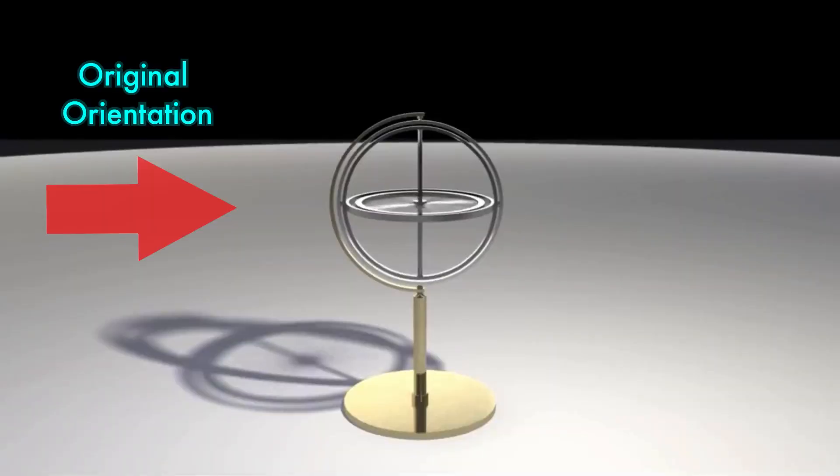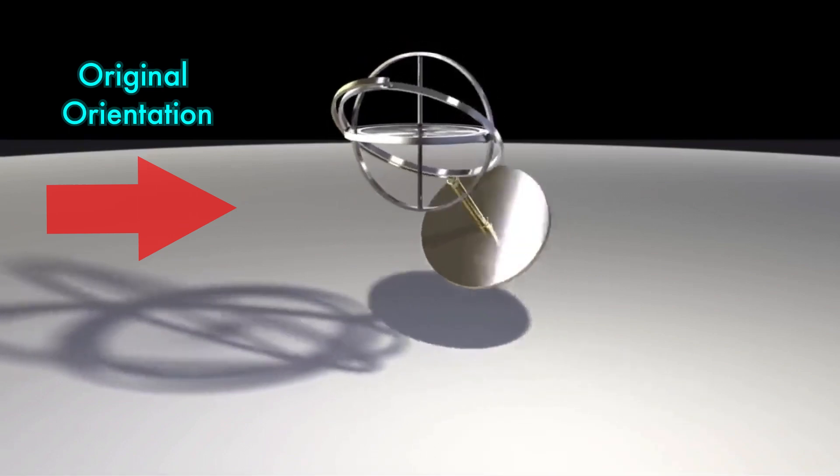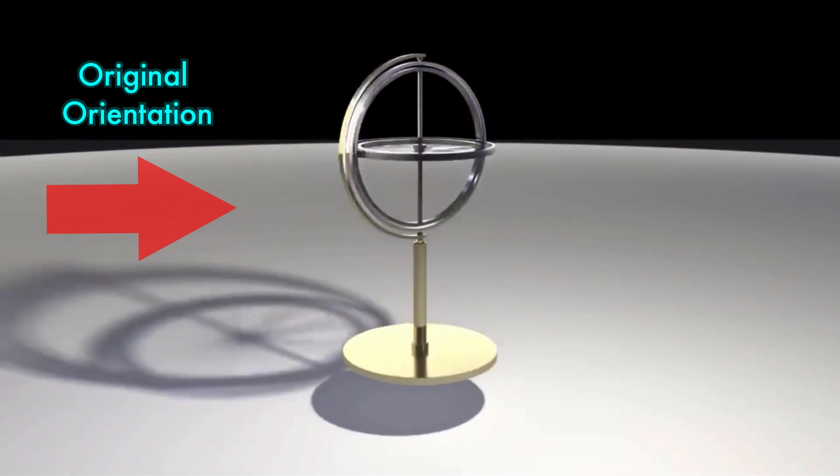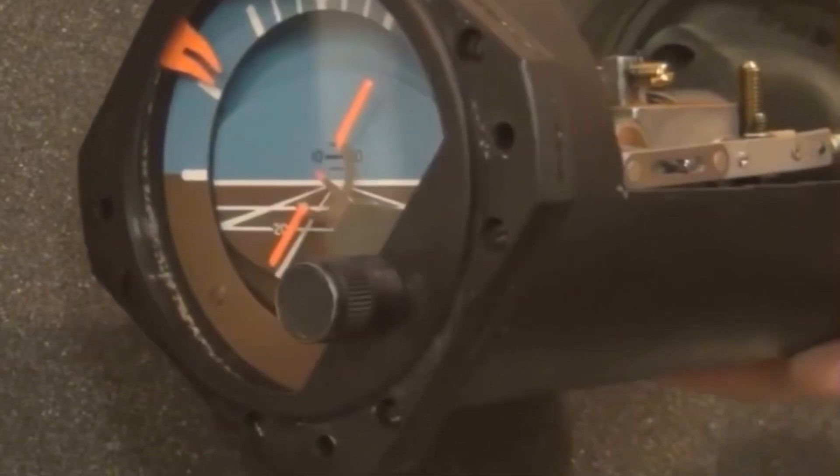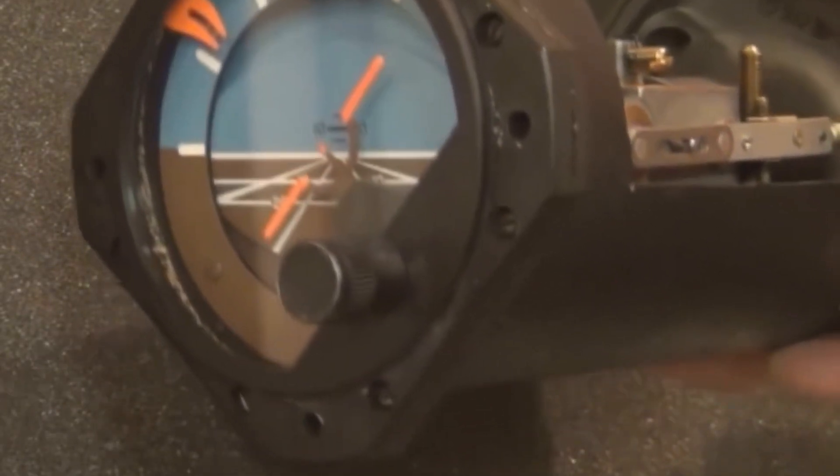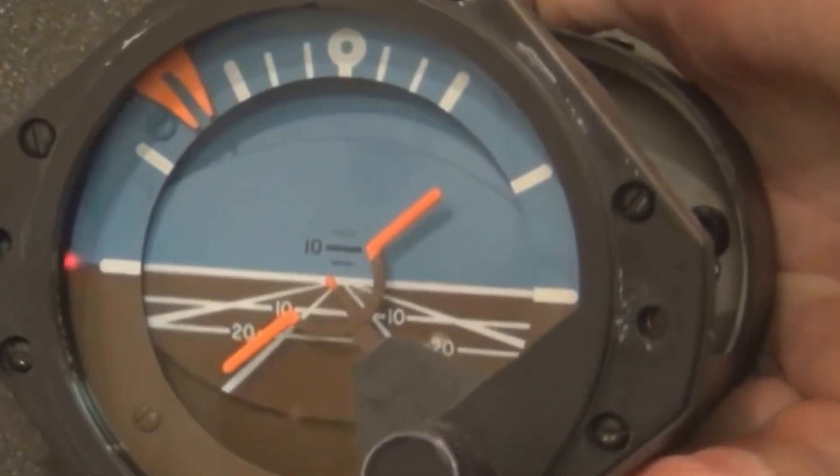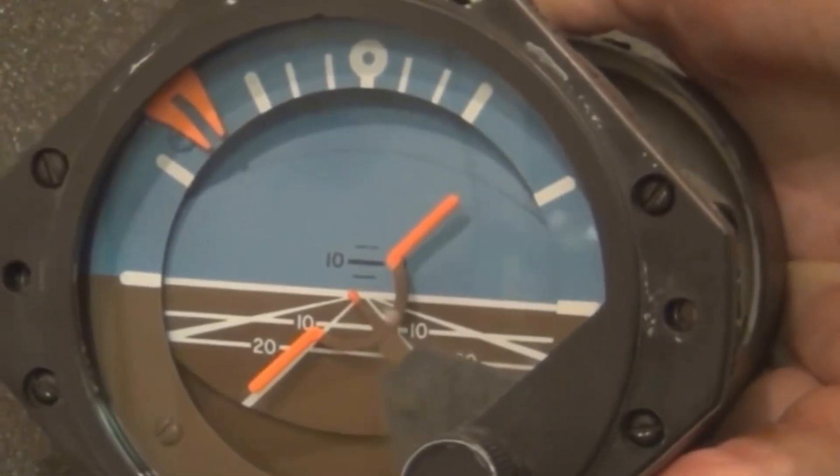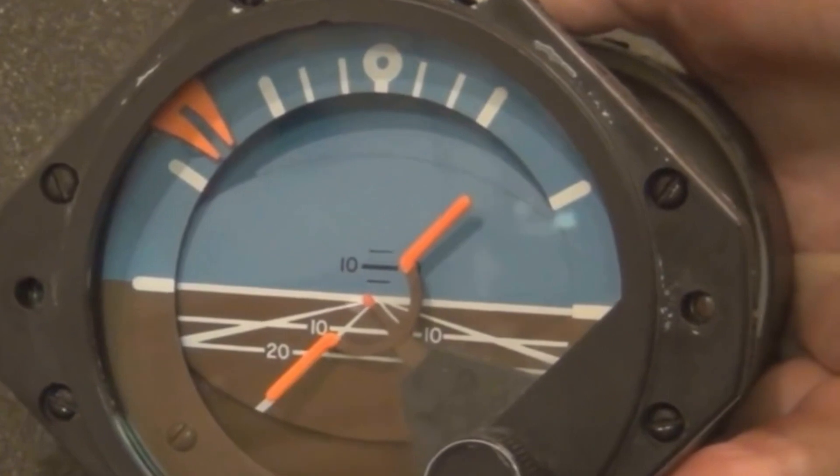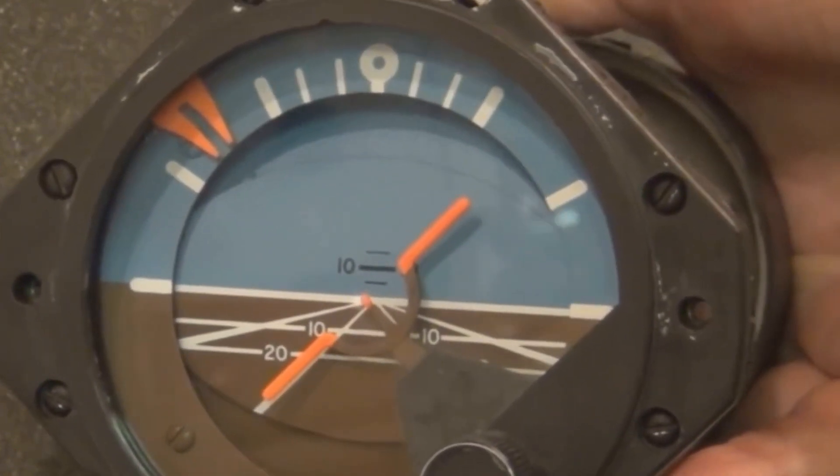When the Attitude Indicator is in operation, gyroscopic rigidity maintains the horizon bar parallel to the natural horizon. When the aircraft's pitch or bank attitude changes, the miniature aircraft being fixed to the case moves with it. These movements of the instrument's case with respect to the gyro are shown on the instrument's face as pitch and bank attitude changes of the miniature aircraft with respect to the horizon bar.